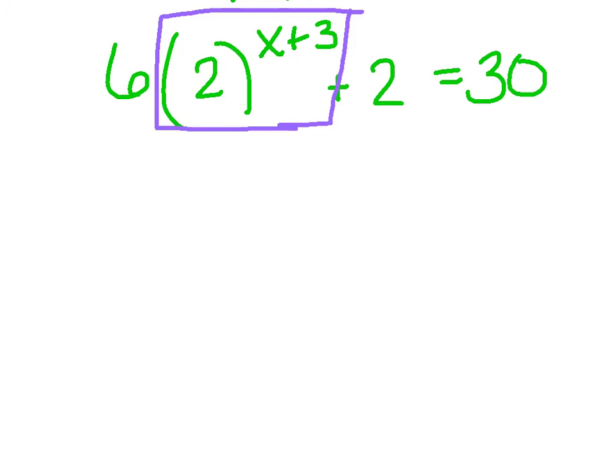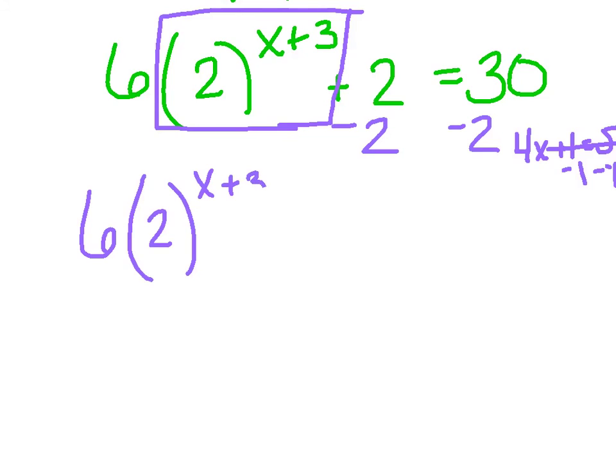Now, it's extremely important whether you move the 6 or 2 over first. We always want to add or subtract first. So I want to subtract the 2 first from both sides. So I'm going to get 6 times 2 to the x plus 3 equals 28. Now I'm just going to box in my base and exponent because I have to get that alone first. I cannot distribute this 6 through. That is not allowed, not legal. These are glued together.